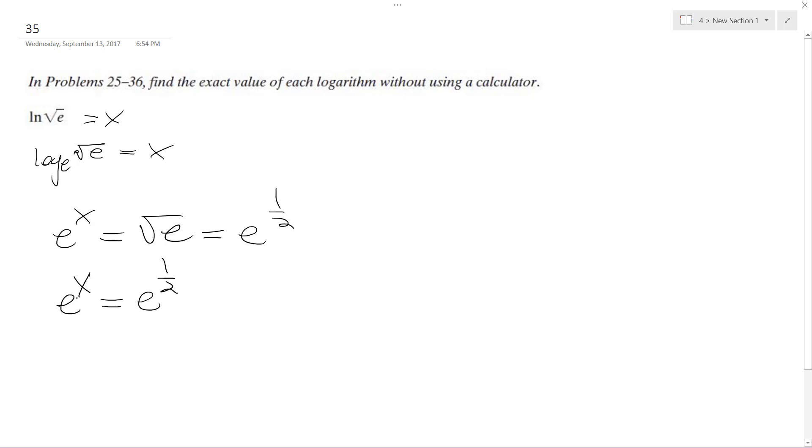So now, because these have the same bases, I can cancel them out. I get x is equal to 1 half. And 1 half is my final solution. That's it.